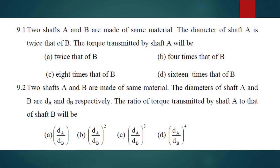2 questions after some time I will solve. Question 1: Two shafts A and B are made of the same metal. The diameter of shaft A is twice that of B. The torque transmitted by shaft A will be how much? I think in KPSC JE also they asked the same question. Question 2: Two shafts A and B are made of the same metal. The diameters of shaft A and B are DA and DB respectively. The ratio of torque transmitted by shaft A to that of shaft B will be how much?